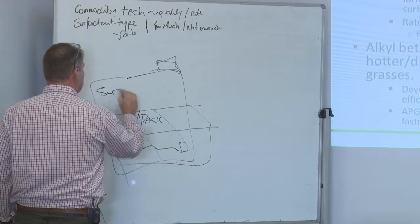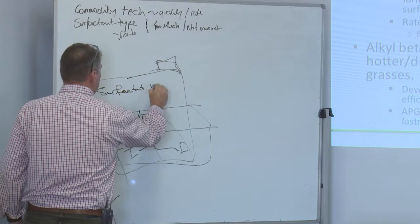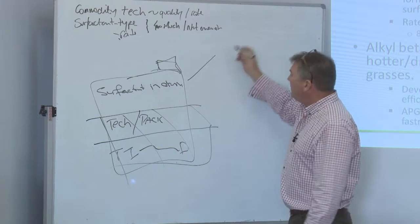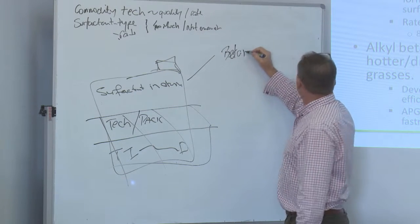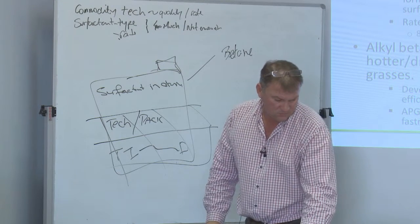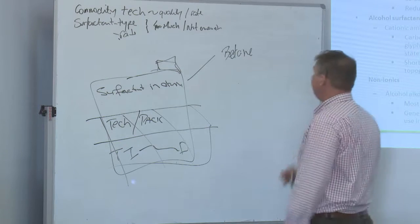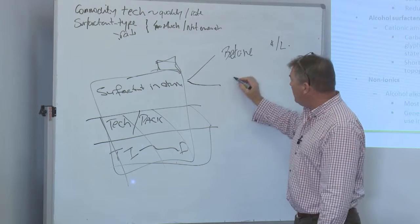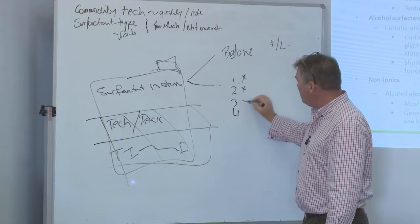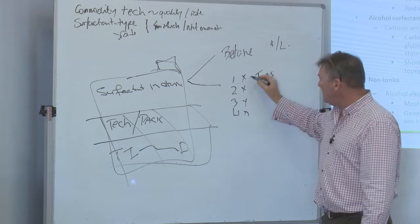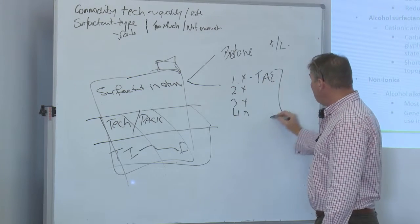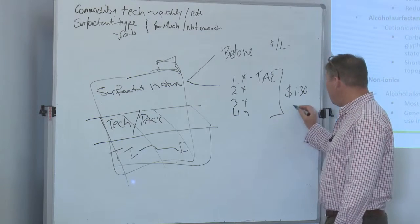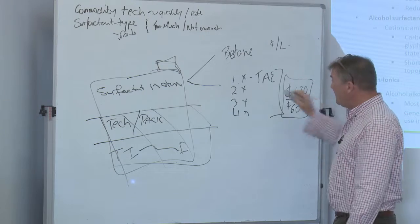So the only thing you get to play with is the surfactant in the drum, really. That's what you can manage. So I can have a betaine, which is that top one. It's actually cents per liter. I can have one to four grades of a tallowamine ethoxylate. It depends on the carbon chain length, and the variation in there can be $1.30 down to about 60 cents. So there's a fair variation just in those.